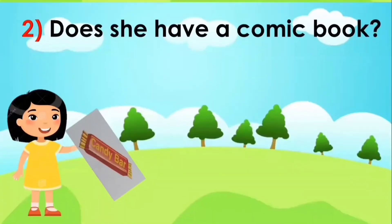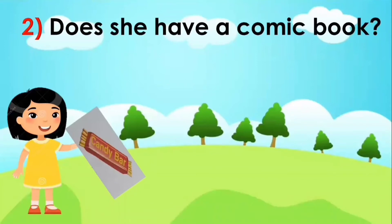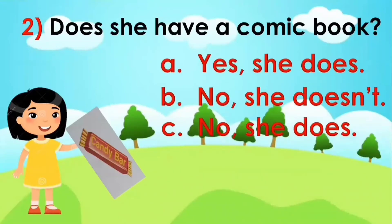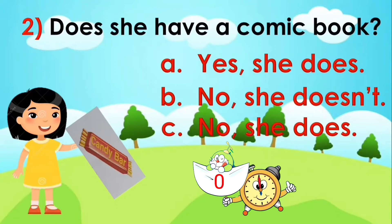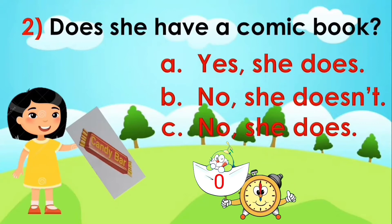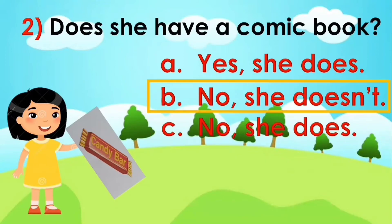Next, does she have a comic book? A: yes, she does. B: no, she doesn't. C: no, she does. Your time starts now. Time is off. The answer is letter B.